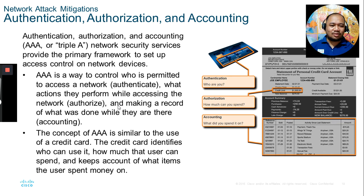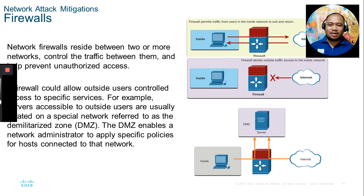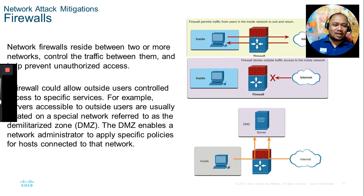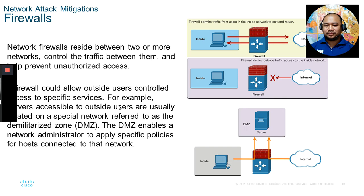Firewall: network firewalls reside between two or more networks, control traffic between them, and help prevent unauthorized access. You place a firewall on your network to control whether internal or external traffic is permitted to propagate packets to a destination. You can use IP addresses or port addresses as variables for controlling traffic. DMZ (demilitarized zone) enables a network administrator to apply specific security policies for hosts connected to that network.